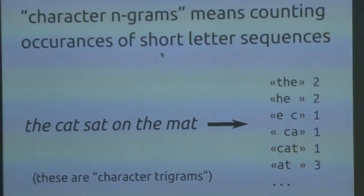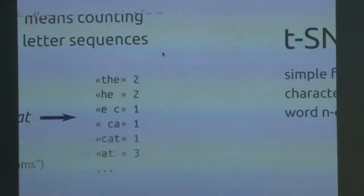In the sentence 'the cat sat on the mat', the three characters T-H-E occur twice, and A-T-space occurs three times. Those counts become a vector, which is a location in that high-dimensional space, which you can then reduce to two dimensions using TSNE.